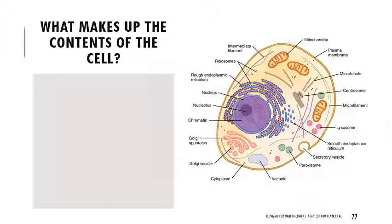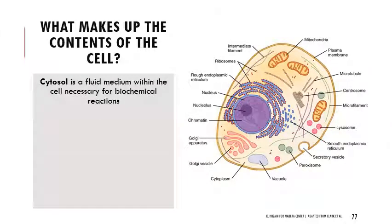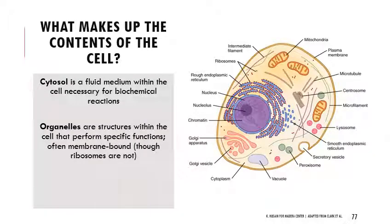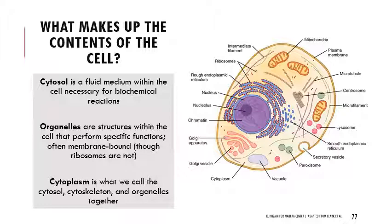Moving past the plasma membrane and getting into the cell, we have a few different contents. We have the cytosol — cyto means cell, sol is a solution — which is the fluid inside your cells, very important for biochemical reactions, containing lots of ions like sodium for the sodium-potassium pump, and primarily water. We also have organelles, which perform very specific functions and are often membrane-bound. We have the cytoskeleton, which I'll talk about in just a moment. Together, the cytosol, cytoskeleton, and organelles form the cytoplasm — all the contents of the inside of the cell.